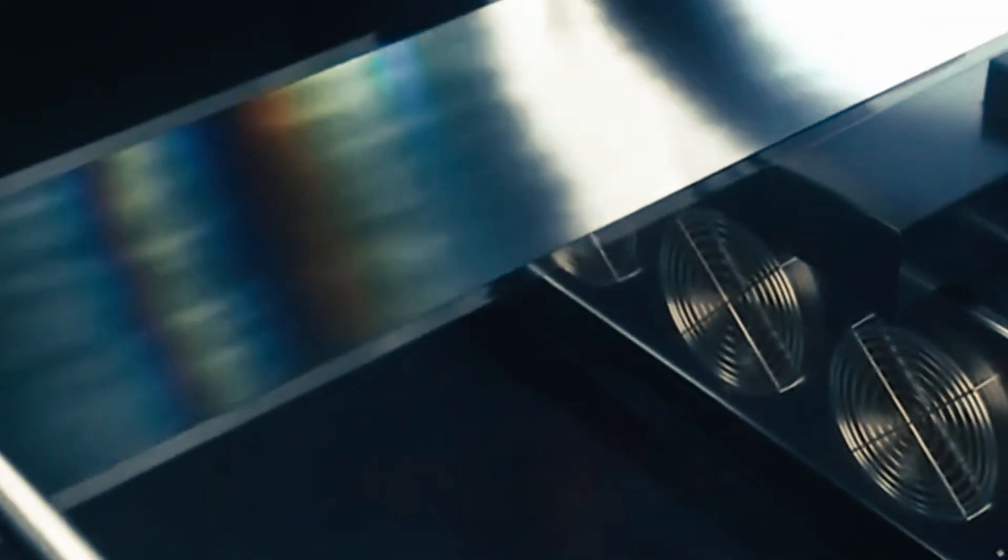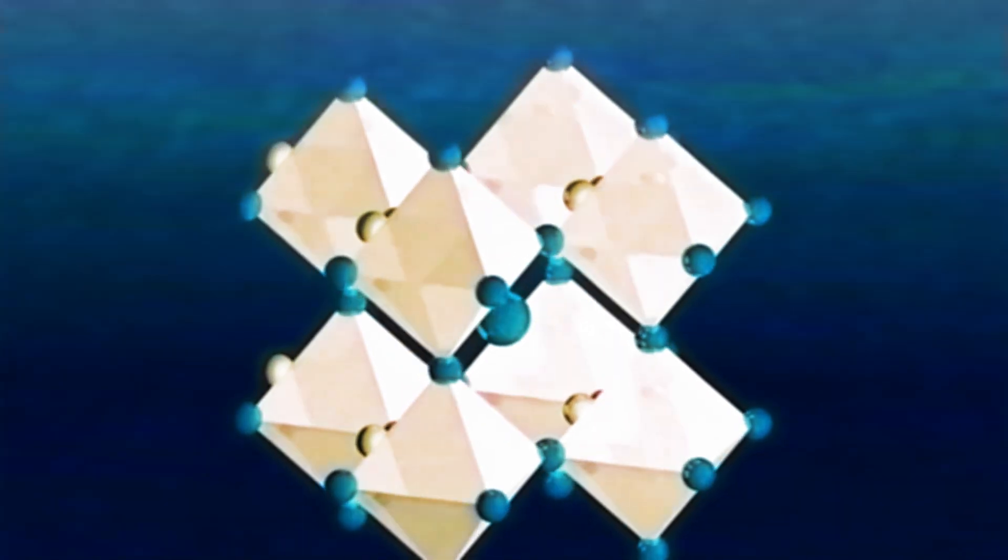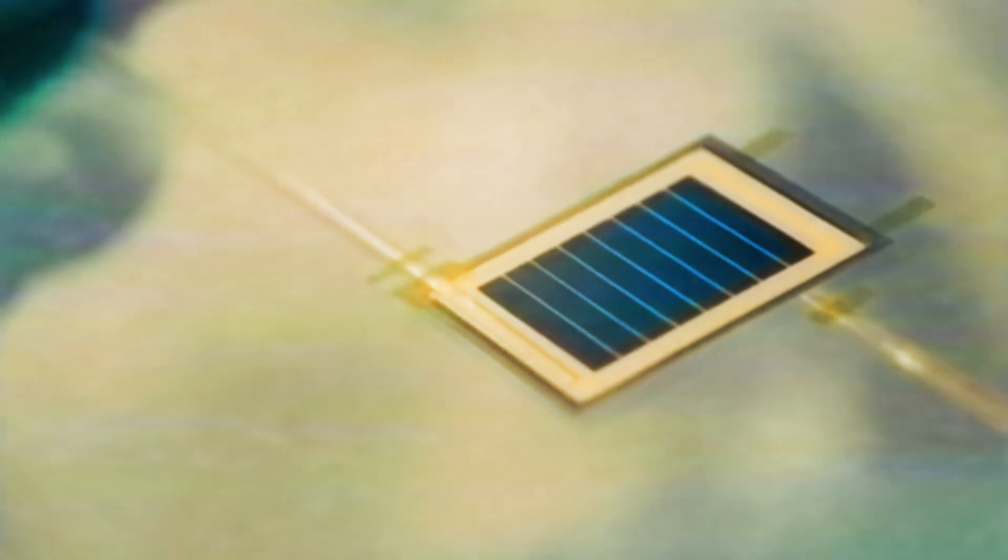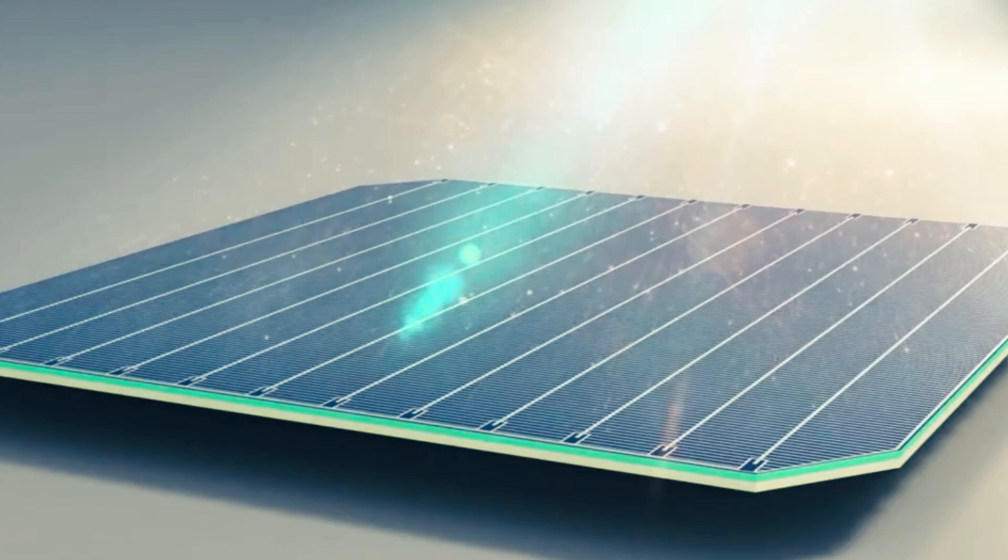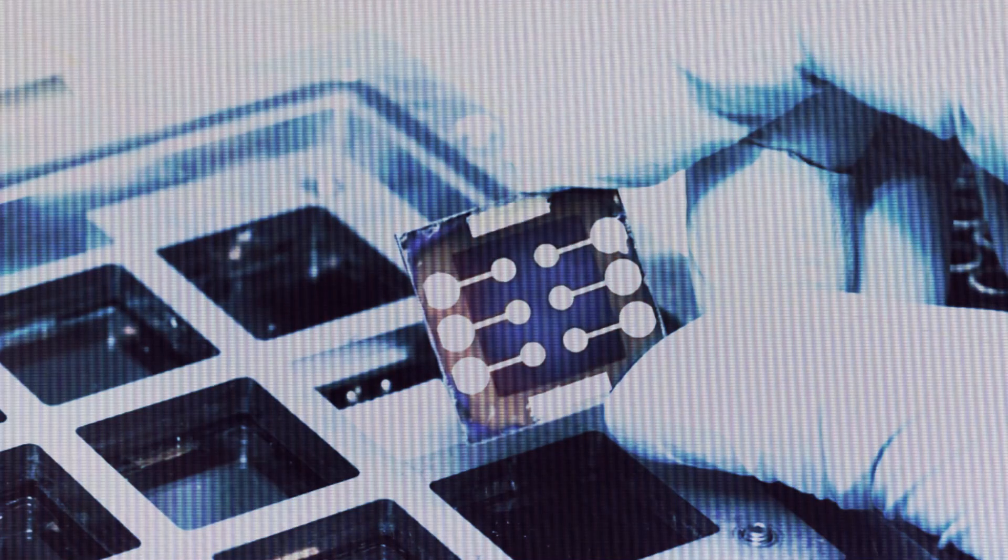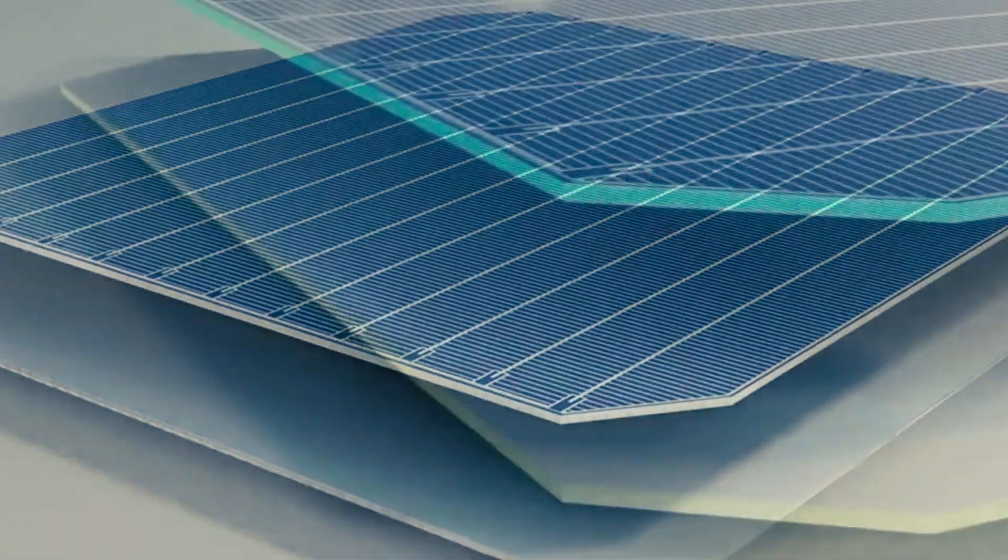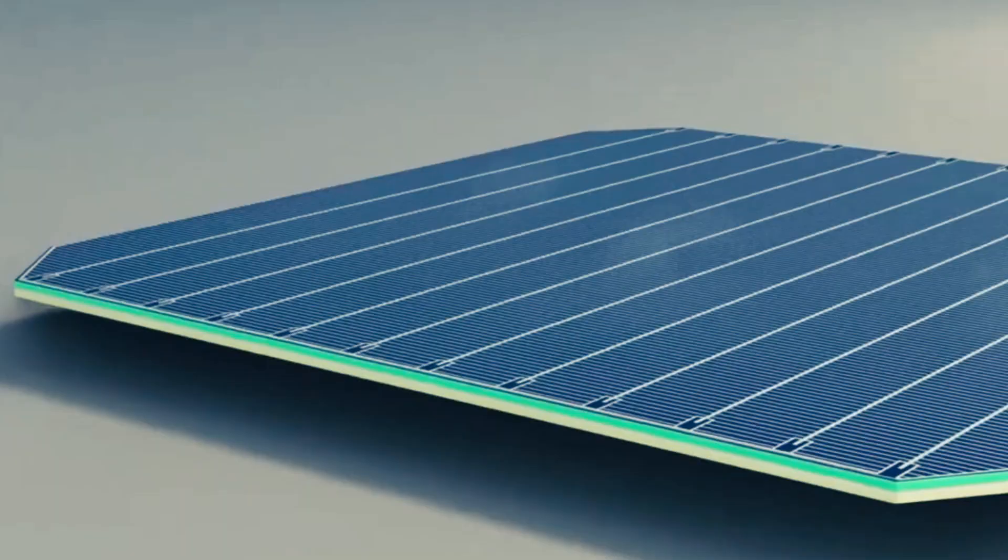Perovskite solar cells hold the promise of lessening the environmental footprint of solar energy generation in contrast to conventional silicon-based photovoltaics. When crafting perovskite materials, less energy and lower temperatures are needed, leading to decreased carbon emissions and environmental impact. Moreover, perovskite solar cells have the advantage of being made with abundant and environmentally safe materials, which adds to their sustainability. With the world's attention turning towards environmental conservation and sustainable development, perovskite solar cells are emerging as a top contender for renewable energy solutions due to their eco-friendly features.